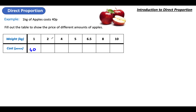Two kilos would be two lots of 40, which is 80. In fact, one times 40, two times 40 — each time I'm just multiplying by 40, because every kilo costs 40 pence. So five lots of 40 pence is 200 pence, which is two pounds.